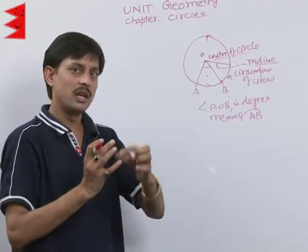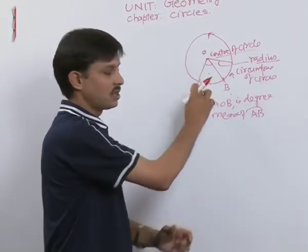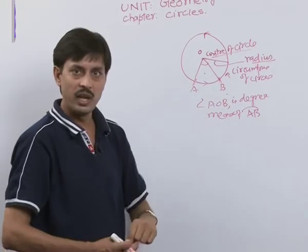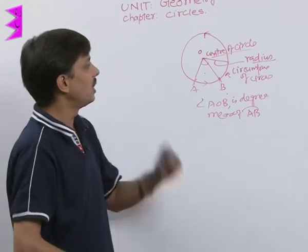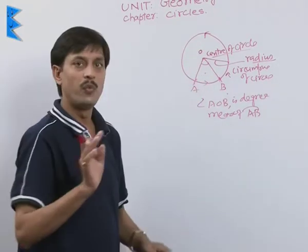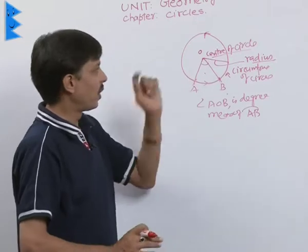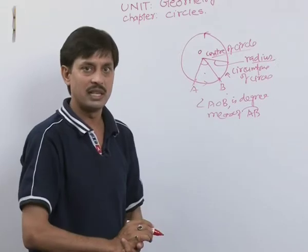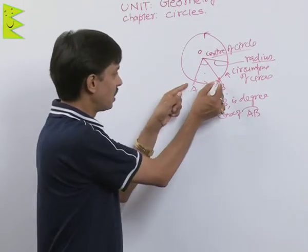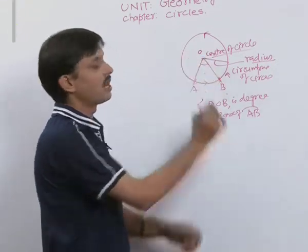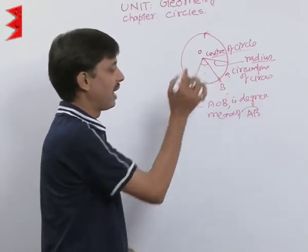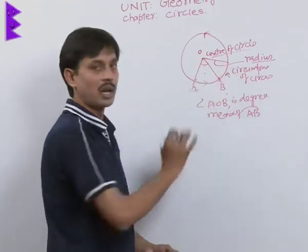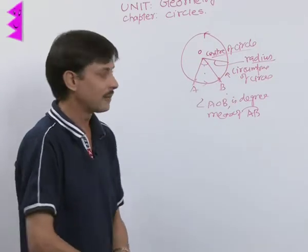To summarize: a circle is the locus of a point in a plane such that the point always remains at equal distance from a fixed point. That fixed point is known as the center. A part of the circle is known as the arc. If the endpoints of an arc are joined to the center, the angle formed is known as the degree measure. The line segment joining the center to the circle is known as the radius.